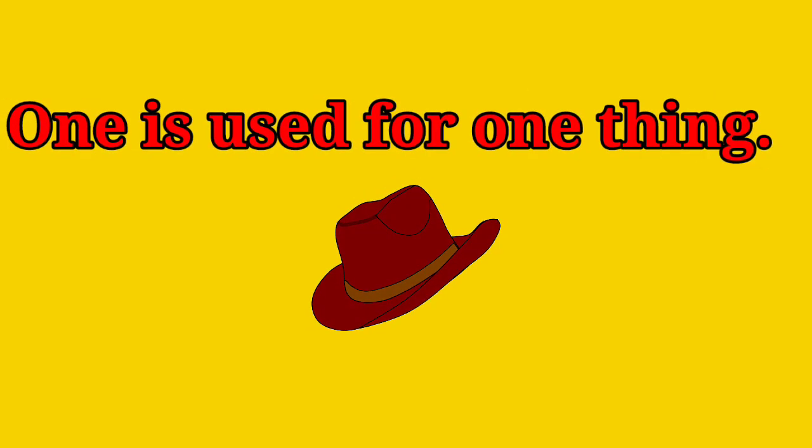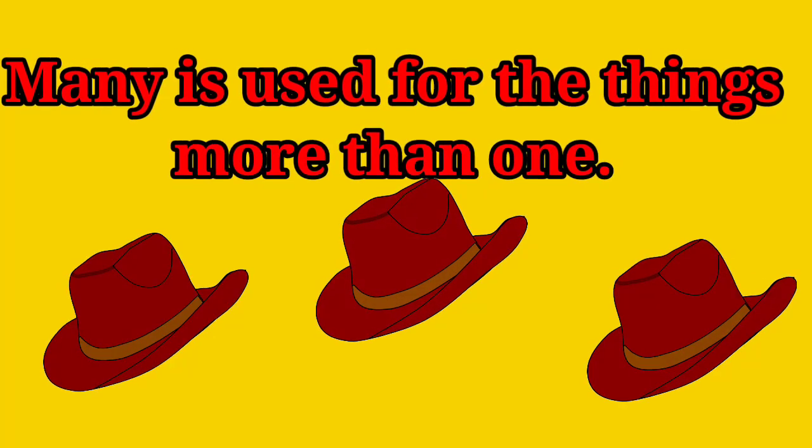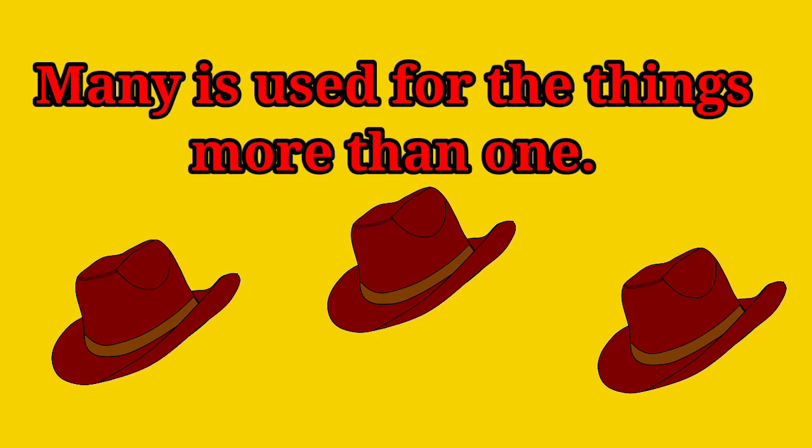One is used for one thing, as one hat. And many is used for things more than one, like many hats. Let's make it more clear with more examples.